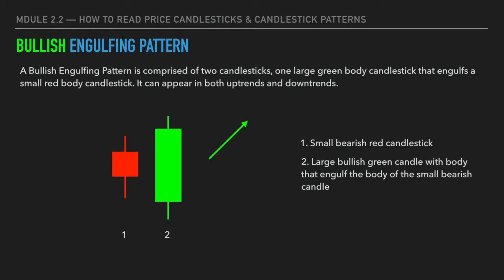Next, let's look at another very common and powerful bullish candlestick pattern — the bullish engulfing pattern. A bullish engulfing pattern is a combination of two candlesticks: one small bearish red candlestick and one large bullish green candle bar whose body engulfs the body of the small red candle. This pattern shows the potential exhaustion of sellers and more buyers entering the market, creating a buying-over-selling imbalance that favors the buyers — so the market turns bullish and the price has a higher probability of going up.